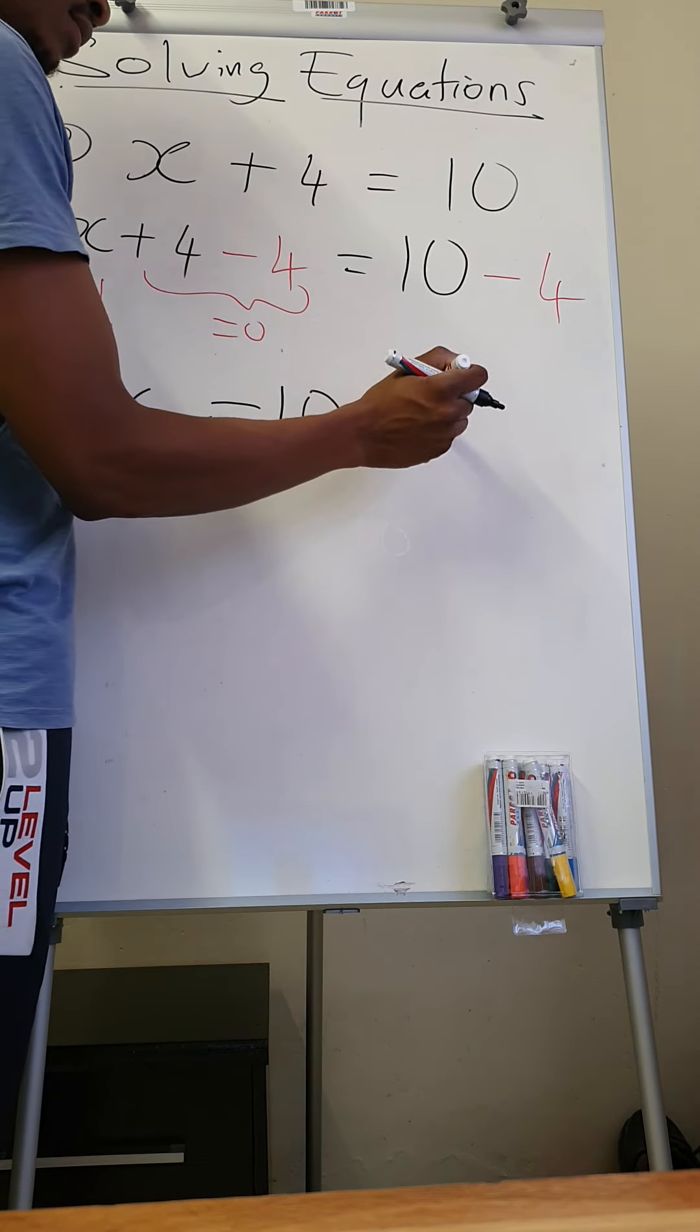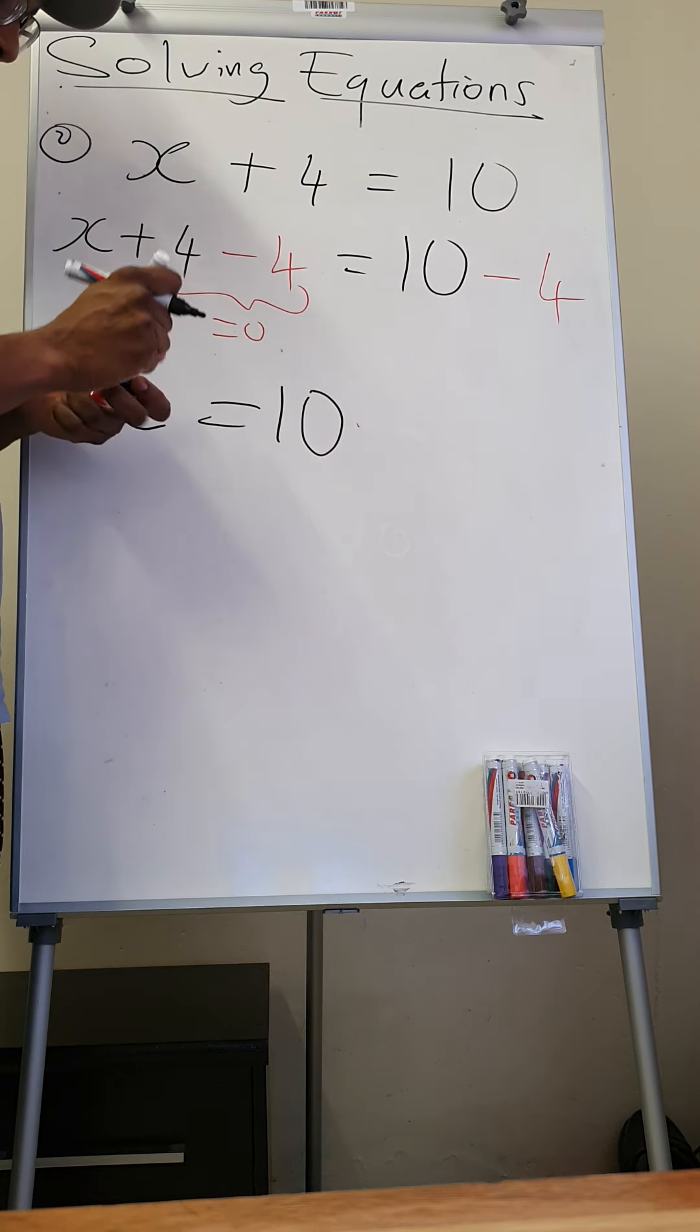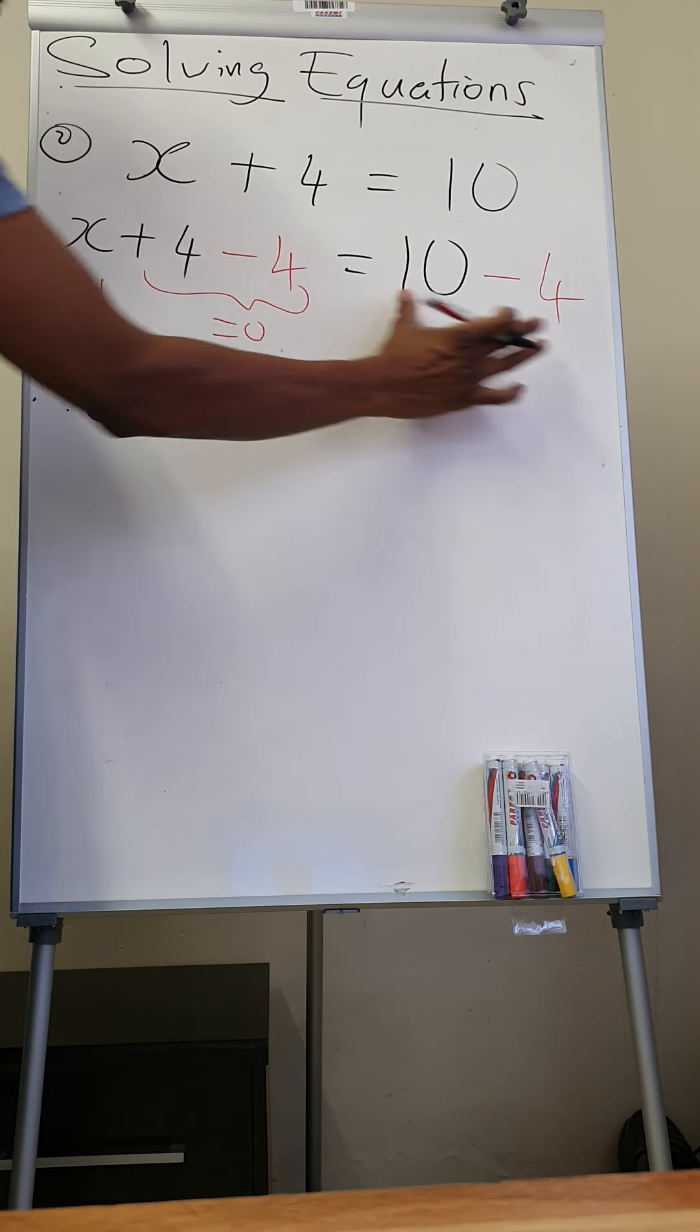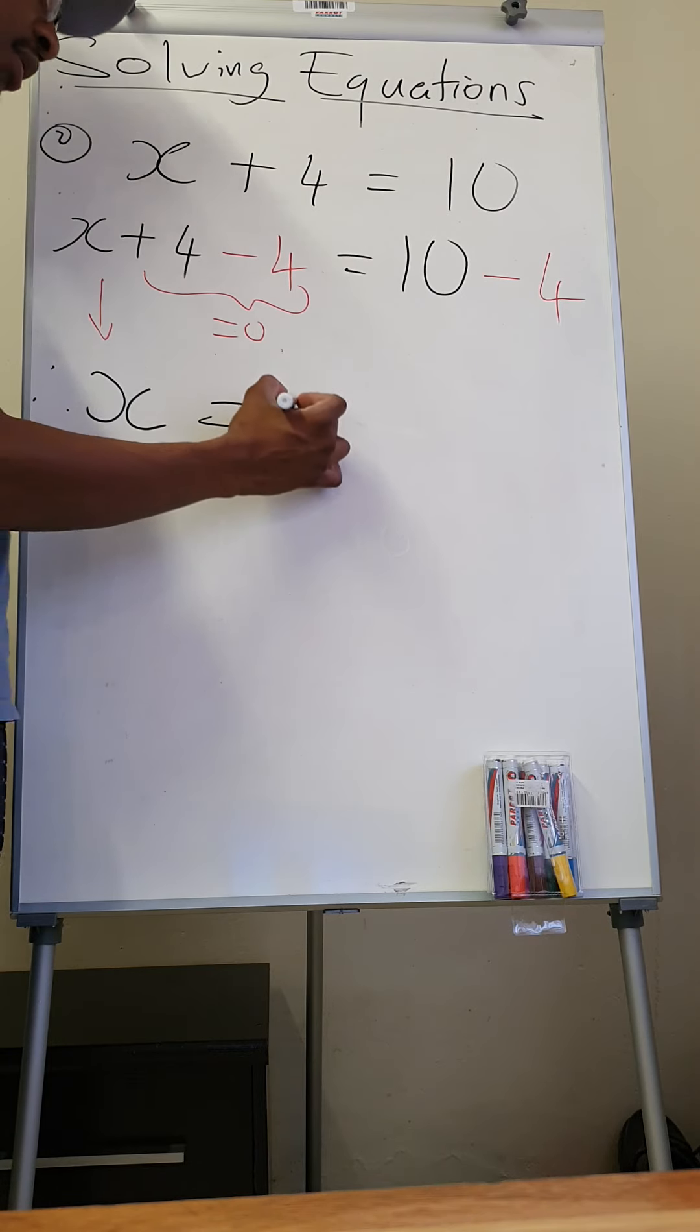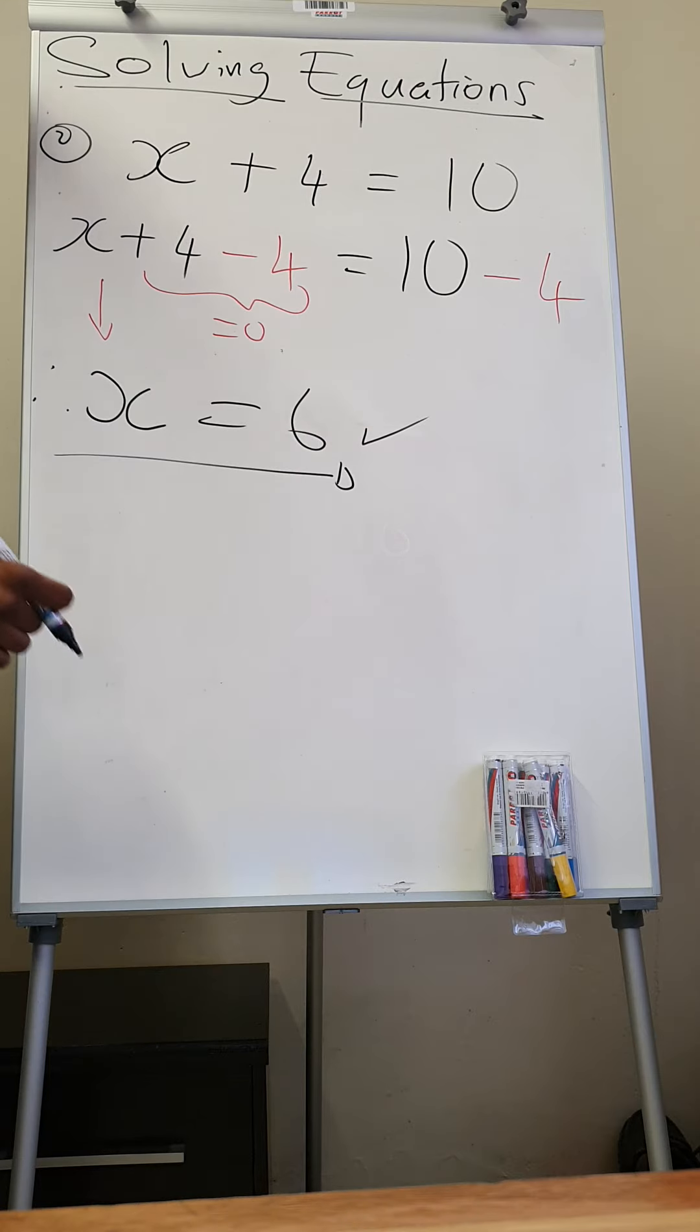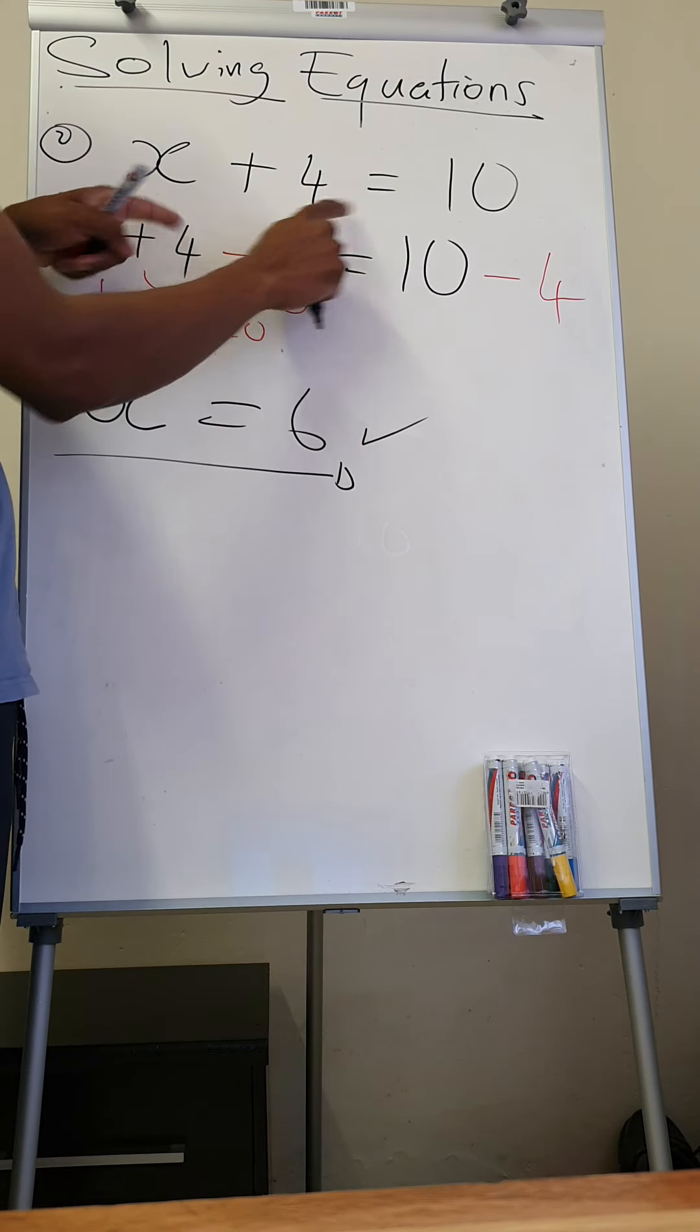Let's just write that, this step here. So x, 10 minus 4 is 6. So your x is equal to 6. So if x is equal to 6, it's going to be 6 plus 4, which is 10.